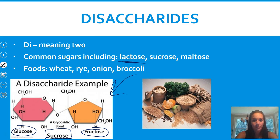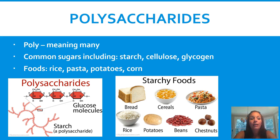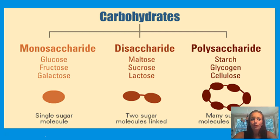The next type is a polysaccharide — poly meaning many. Common polysaccharides include starch, cellulose, and glycogen. These are your heavier kinds of carbs: rice, pasta, and potatoes. If people are carb loading before a major race or swim meet, they'll eat pasta or rice or potatoes because those sugars last longer and take longer for your body to break down. So to review: monosaccharide is single, disaccharide is two, and polysaccharide is many.